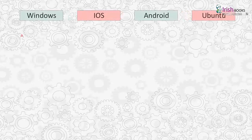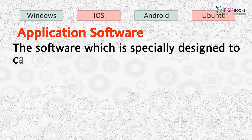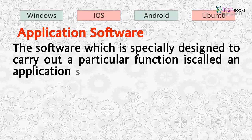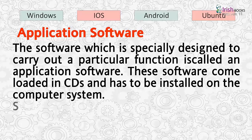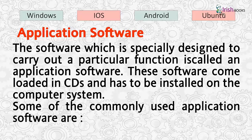Application software. The software which is specially designed to carry out a particular function is called an application software. The software comes loaded in CDs and has to be installed on the computer system. Some of the commonly used application software are: